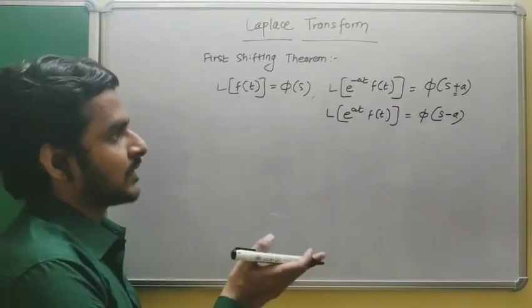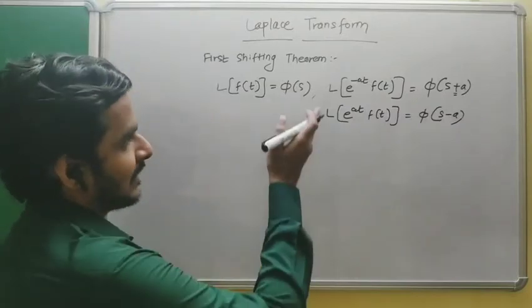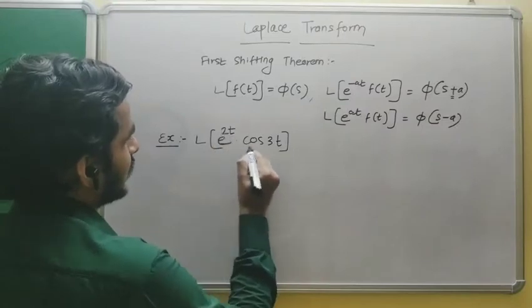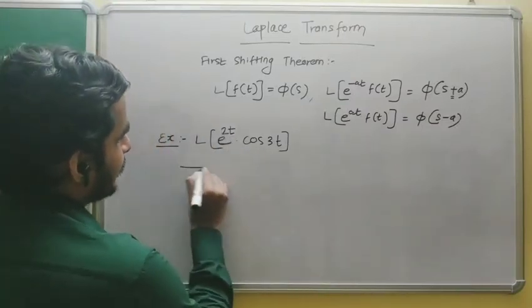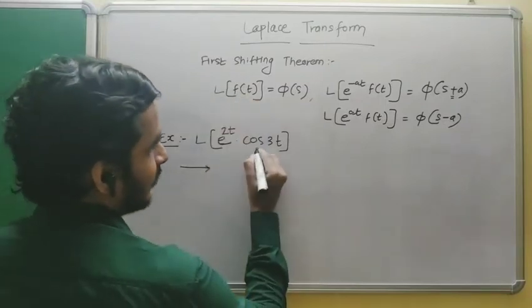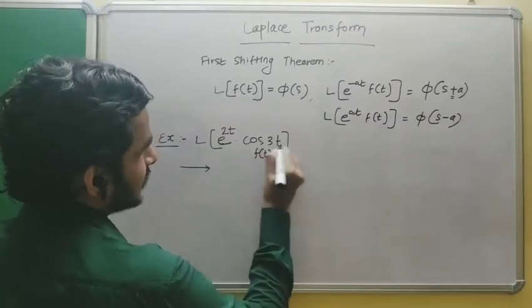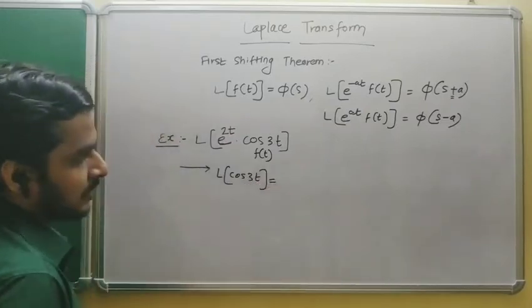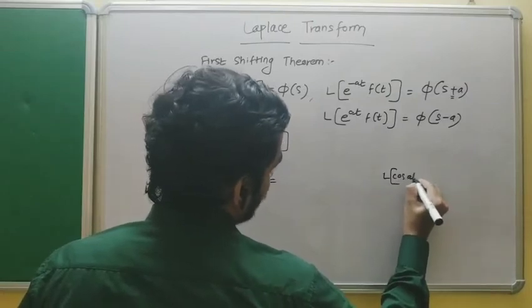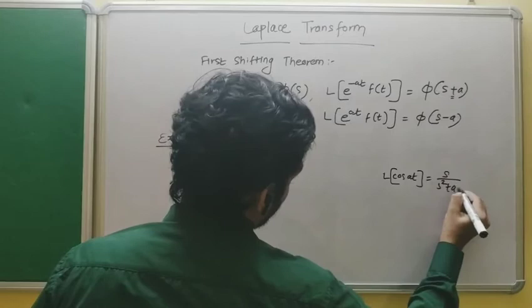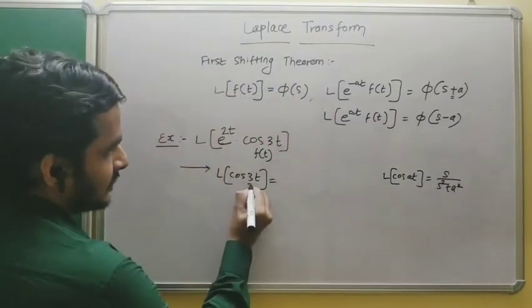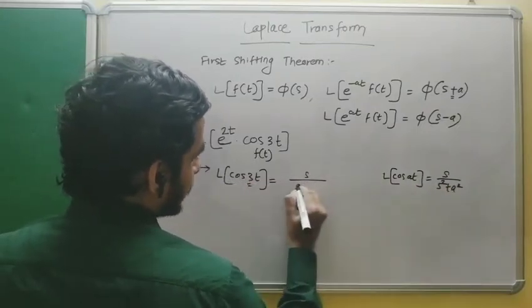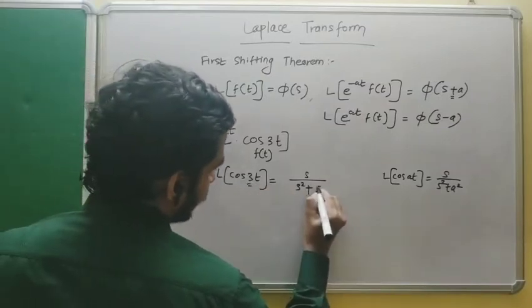Let's see an example to get an idea about how to apply this theorem. The given problem is: find the Laplace transform of e^(2t)·cos(3t). In the first step, you have to find the Laplace transform of f(t), where f(t) = cos(3t). We have a direct formula for the Laplace transform of cos(at), which is s/(s²+a²). Here a is 3, so the Laplace transform of cos(3t) is s/(s²+9).